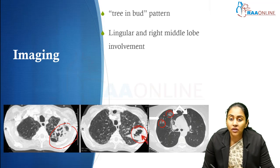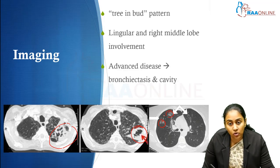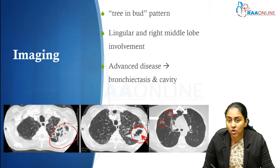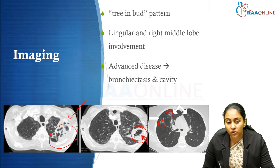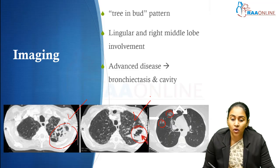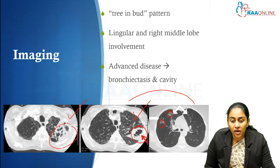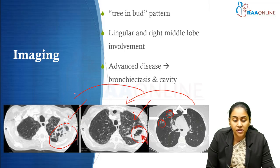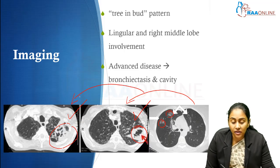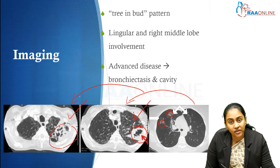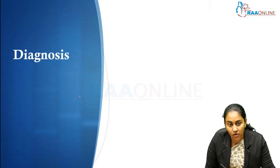Lingular involvement and right middle lobe involvement is something that is more commonly seen in patients with non-tuberculous mycobacterial infection. When they do have an advanced disease, they may go on to develop bronchiectasis or a cavity. Remember, initially it may start off as tree-in-bud appearance, involves more and more of the middle lobes on the right and the lingular lobe on the left, and it goes on to develop cavities and nodular bronchiectasis.